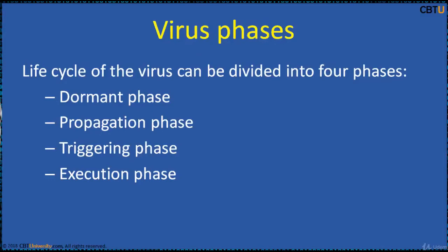Triggering phase: A dormant virus moves into this phase when it is activated and will perform the function for which it is intended. The triggering phase can be caused by a variety of system events or a particular date and time.